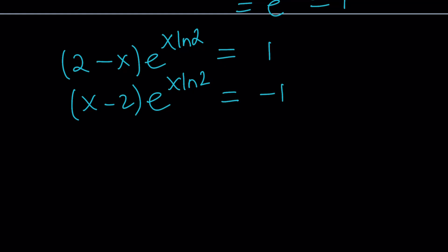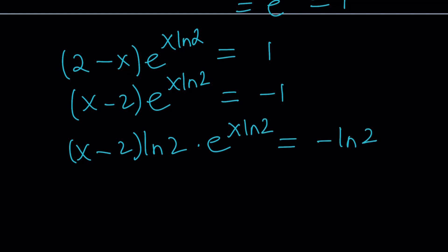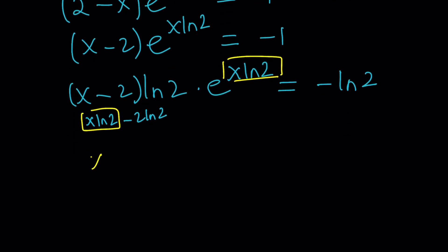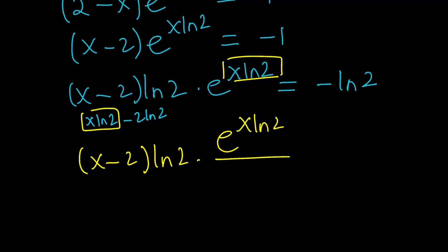Now let's go ahead and manipulate this even more, because I do have x minus 2, but I don't have e to the power x minus 2. First, let's take care of ln 2 — multiply both sides by ln 2. That's going to bring the ln 2 at the bottom, and we do need that. Now notice that x minus 2 multiplied by ln 2 is the same thing as x ln 2 minus 2 ln 2. I'm going to take this expression and divide e to the power x ln 2 by e to the power 2 ln 2.